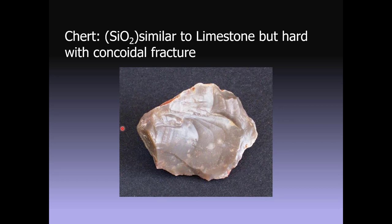People bring me rocks to identify, and after a while they get tired of me saying that's chert, that's chert, that's chert too. The fun thing about chert is it has conchoidal fracture — which we talked about with quartz and obsidian — this tendency to break in round surfaces that make a sharp edge. So it's a very valuable rock for making arrowheads and spear points. We'll also visit a quarry for a rock with conchoidal fracture on one of our virtual field trips.